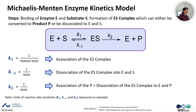In this slide we see the formation of the ES complex from the free enzyme and the substrate, and the dissociation of the ES complex to the free enzyme and the product. K1, K-1, and K2 are the reaction rate constants: K1 for the association of the ES complex, K-1 for the dissociation of the ES complex into the free enzyme and the substrate, and K2 for the dissociation of the ES complex into the free enzyme and the product.